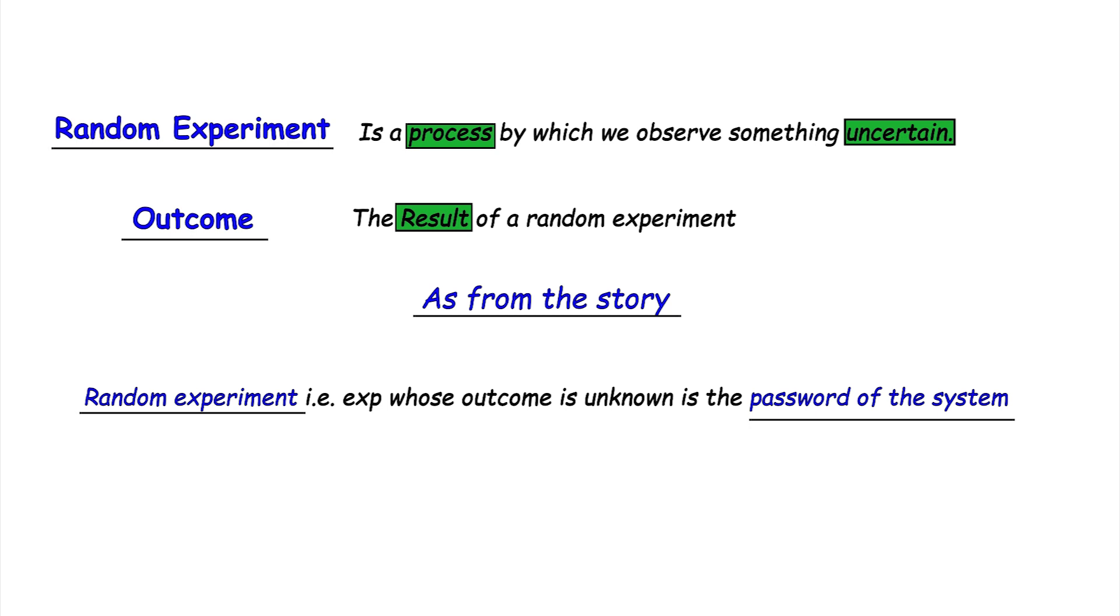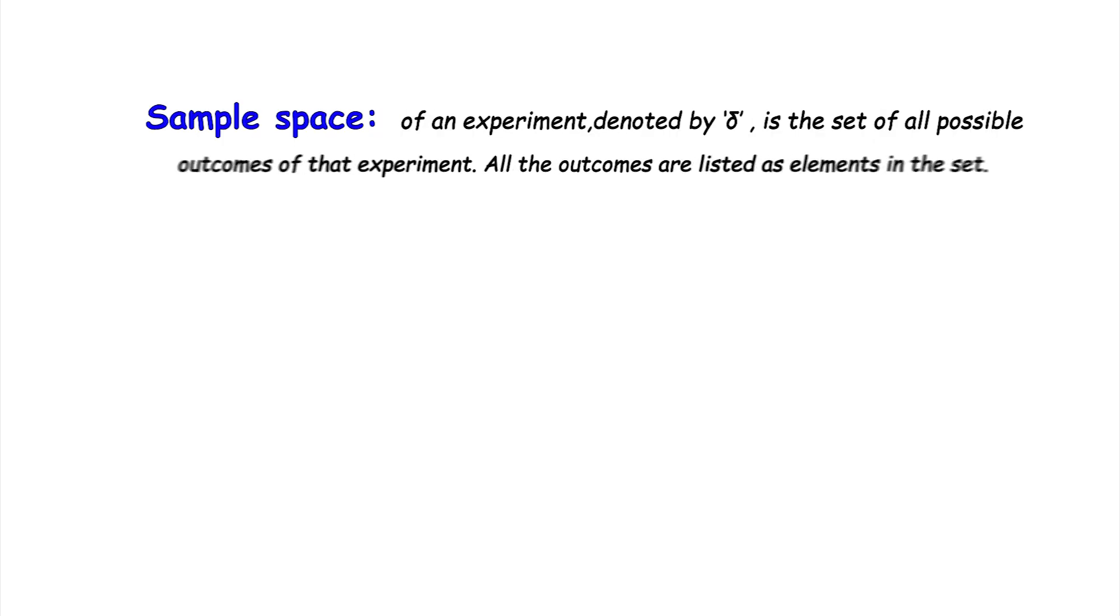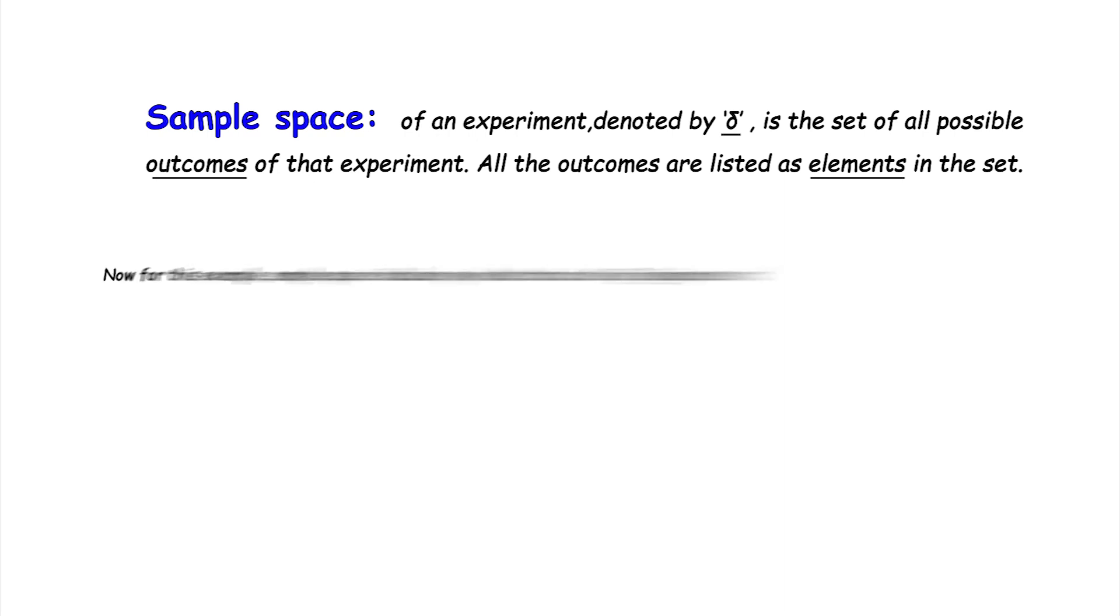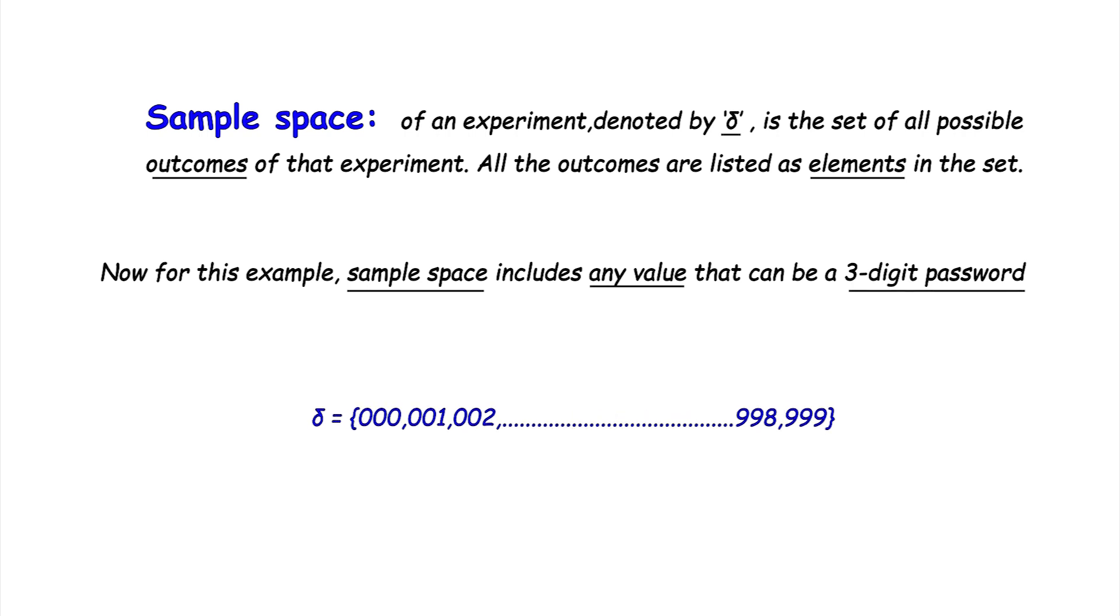Sample space of an experiment, denoted by Delta, is the set of all possible outcomes of that experiment. All the outcomes are listed as elements in the set. Now, for this example, sample space includes any value that can be a three-digit password. It can be anything from 000 to 999.